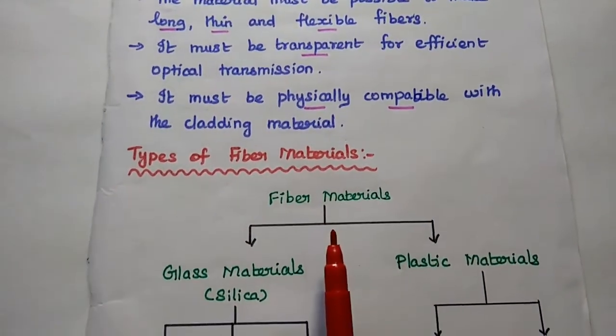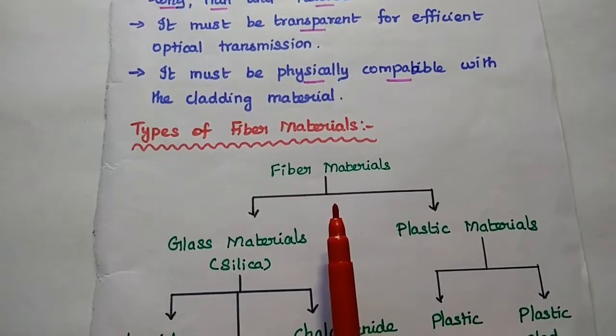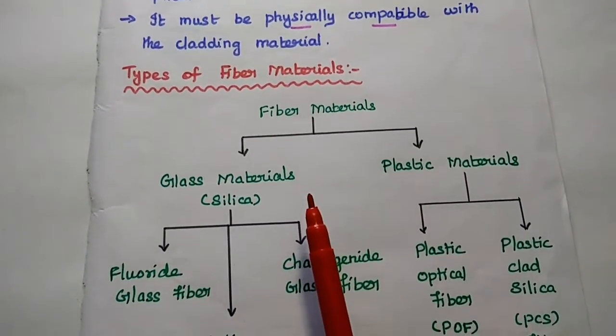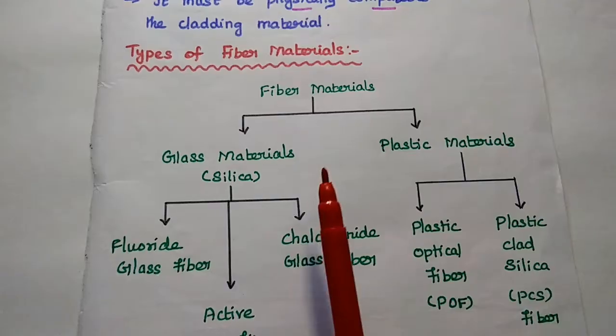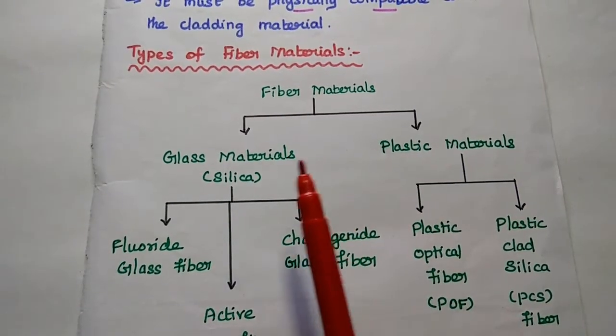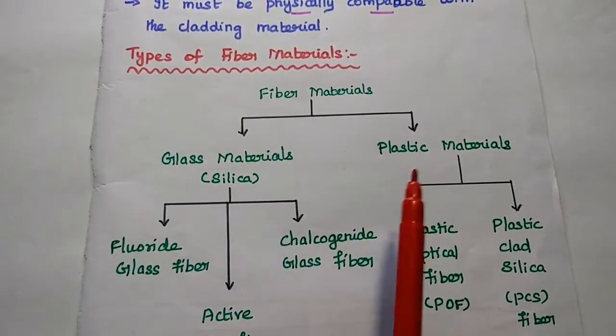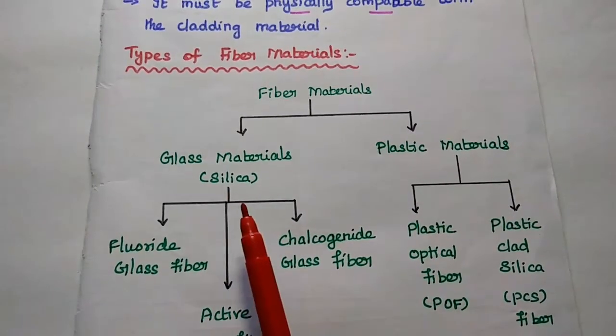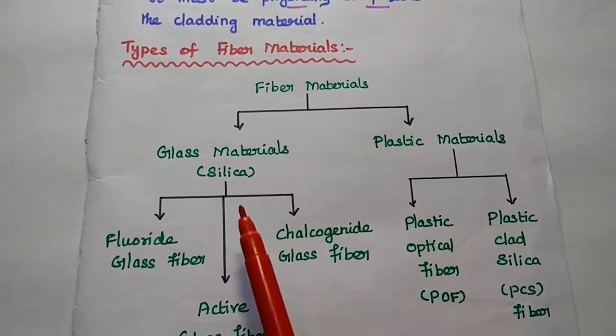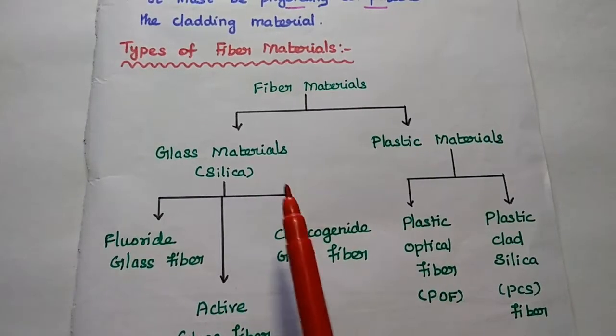So next, different types of fiber materials. There are different types of materials available for optical fibers. It can be broadly classified into two types: glass material and plastic material. In this glass materials, silica is the pure raw material.